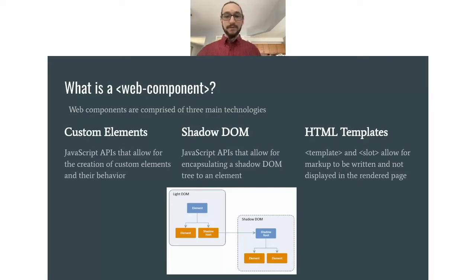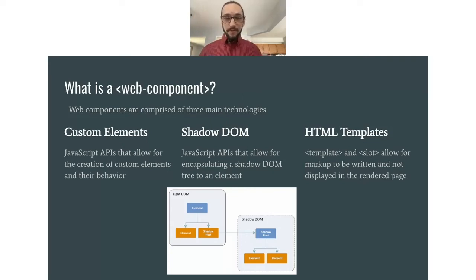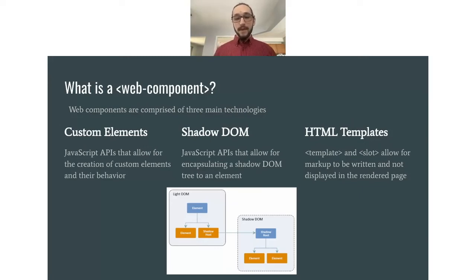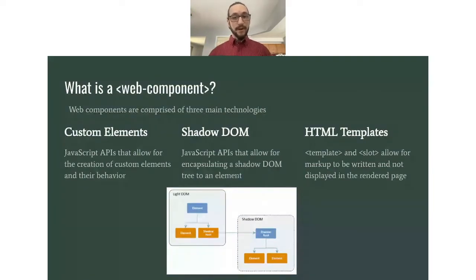The shadow DOM is a set of JavaScript APIs that allow for encapsulating a shadow DOM tree to an element. As shown in a diagram, the light DOM has many elements while the shadow DOM is only accessible to the shadow host — so all styling and logic within it is not leaked out into the light DOM. HTML templates use template and slot tags to allow markup to be written without being displayed on a rendered page. We'll mainly be focusing on custom elements and shadow DOM for React to Web Component.